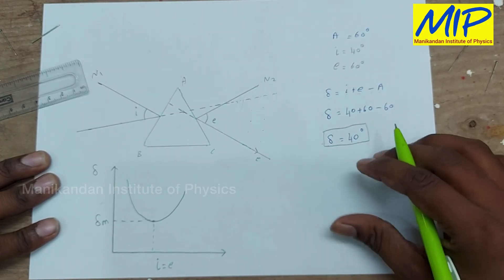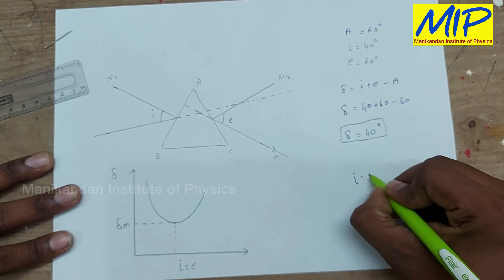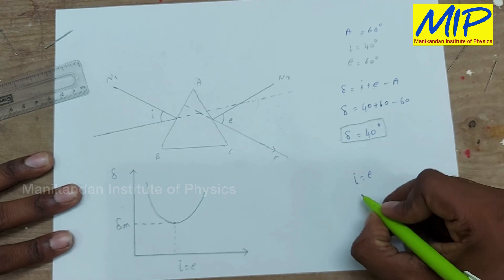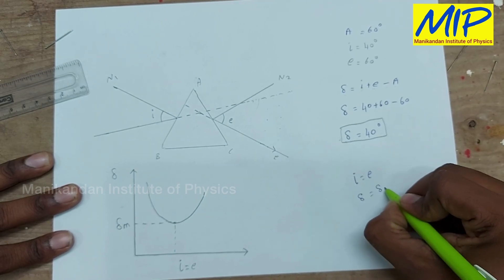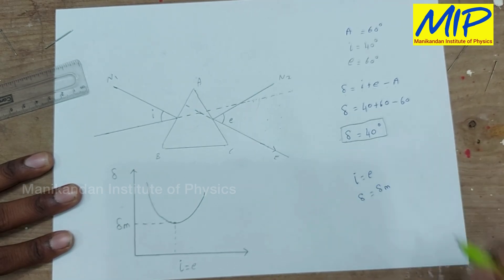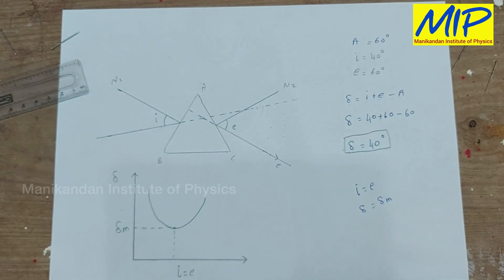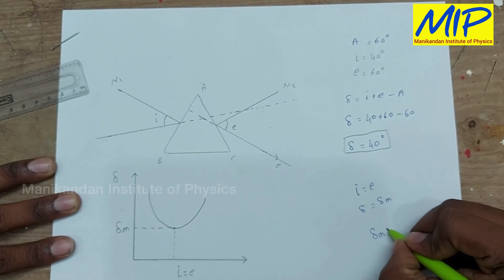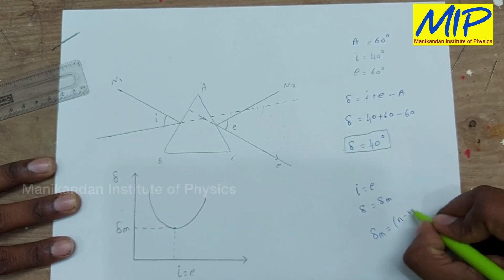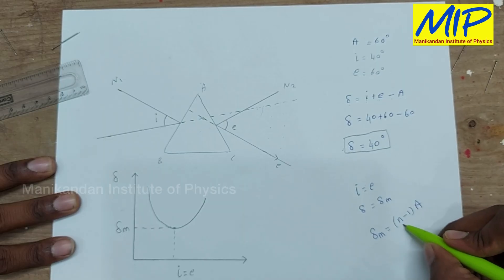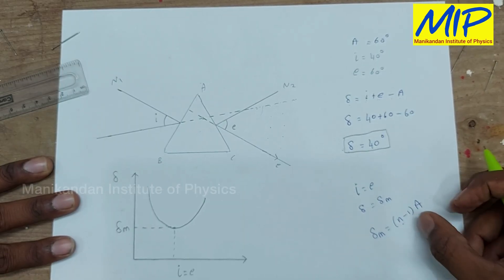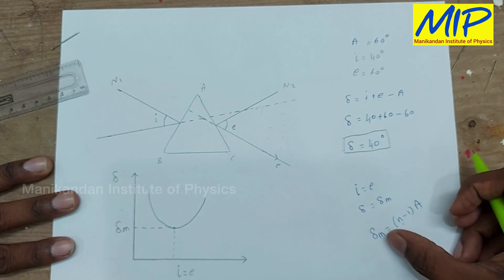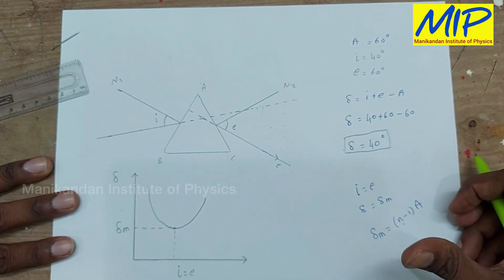At the angle of minimum deviation, when I equals E, delta equals delta m. The angle of minimum deviation of a given prism is given by delta m equals n minus 1 multiplied by A, where n is the refractive index of the medium with respect to air, and A is the angle of the prism. The angle of minimum deviation of a particular prism is a constant.